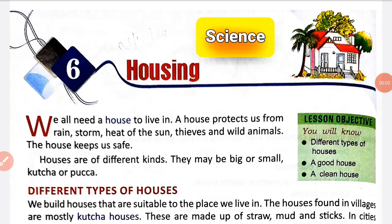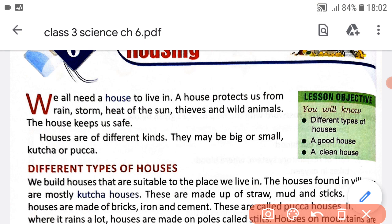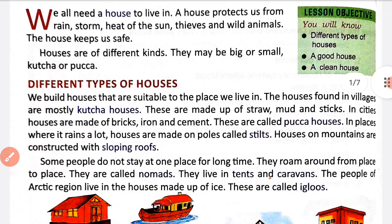Hello everyone, today we are going to start another chapter of science, that is Chapter 6: Housing. In this chapter we will cover three topics: different types of houses, a good house, and a clean house. We all need a house to live in — hum sabi ko ek house ki need hoti hai. A house protects us from rain, storm, heat of the sun, thieves, and wild animals. The house keeps us safe.